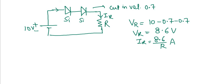If asked for the current through diode D1 or D2: since the diodes are in series, the current through each diode equals the same current IR flowing in the loop. Therefore, the diode current ID1 and ID2 are both equal to the resistance current IR.